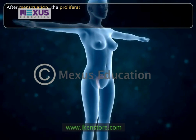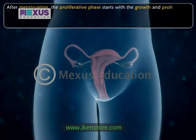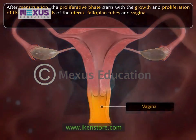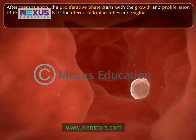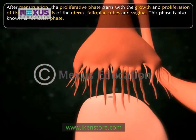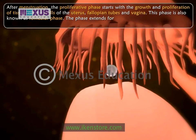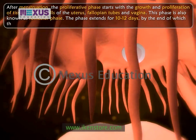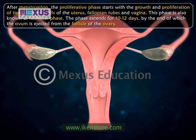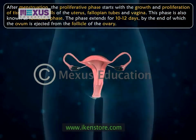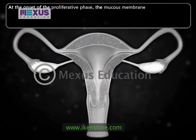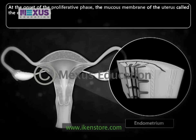After menstruation, the proliferative phase starts with growth and proliferation of tissues on the walls of the uterus, fallopian tubes, and vagina. Since this phase involves a growing follicle in the ovary, it is also known as the follicular phase. The phase extends for 10 to 12 days, by the end of which the ovum is ejected through ovulation from the follicle of the ovary. It involves changes in the uterus and the ovary. At the onset of the proliferative phase, the mucous membrane of the uterus, called the endometrium, is thin.